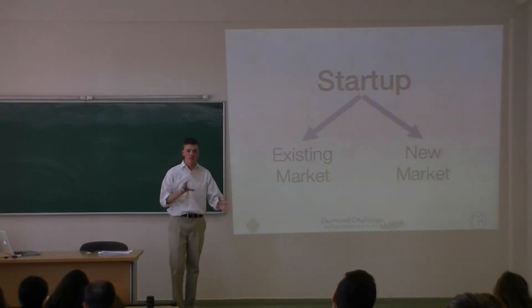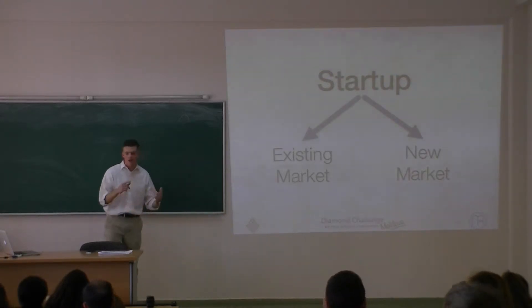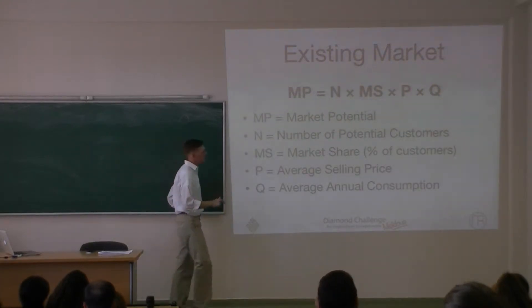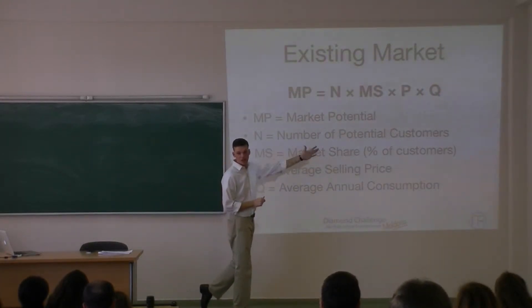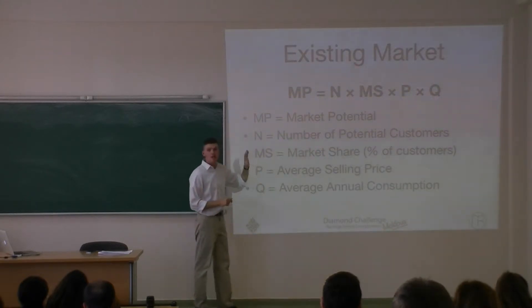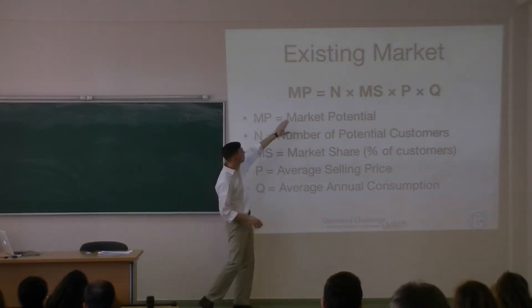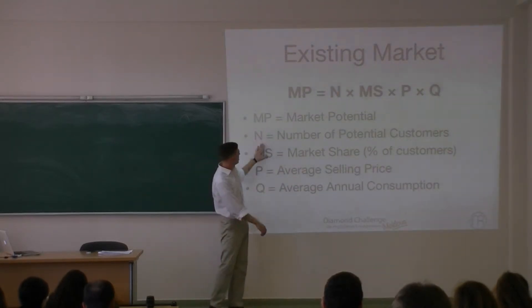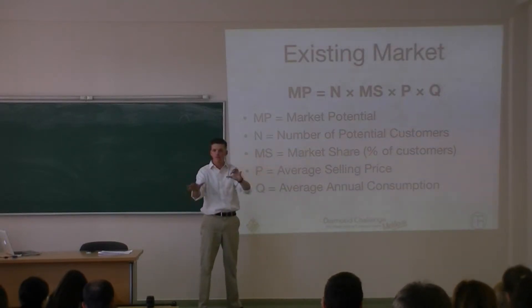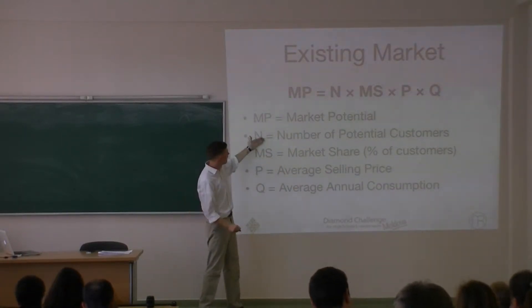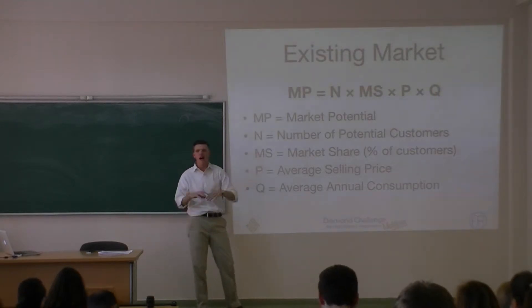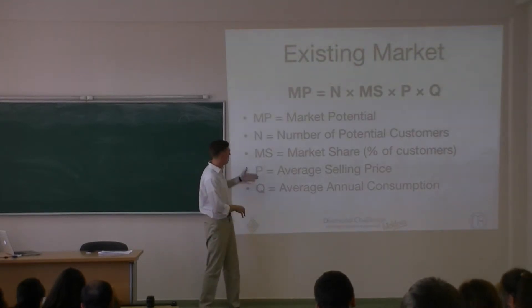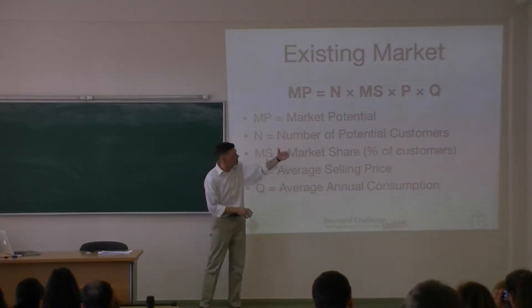Creating a new market could be a big risk but also a big reward — you have to make sure they actually have the problem. To measure your market potential for an existing market, it's available online. You can write in your paper that your market potential equals the number of potential customers in your segment times the market share you think you'll capture — say 30% — times your average selling price.